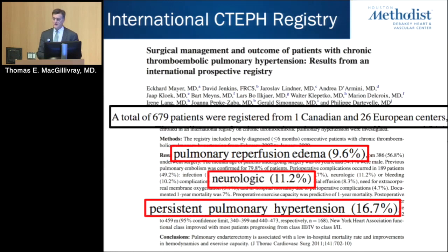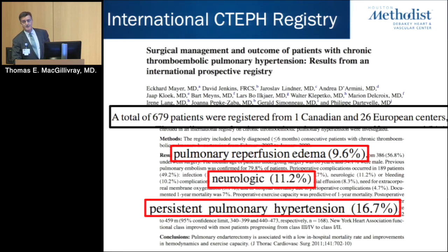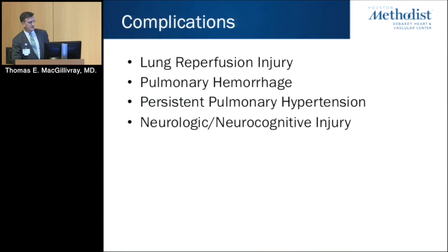How about complications? This is a big operation, and as I was taught as a resident: if you do big operations, expect big complications. In the international experience, they had about a 10% incidence of pulmonary reperfusion edema, about 10% neurologic outcomes, and persistent pulmonary hypertension in about 17% of patients. The big issues that need to be mentioned and managed are lung reperfusion injury, pulmonary hemorrhage, persistent pulmonary hypertension, and neurologic and neurocognitive injuries.